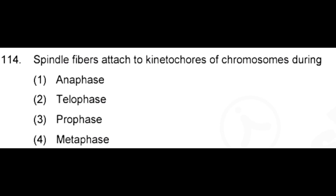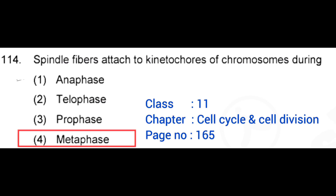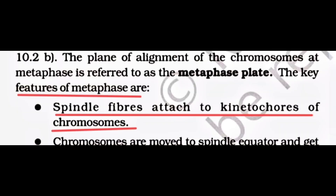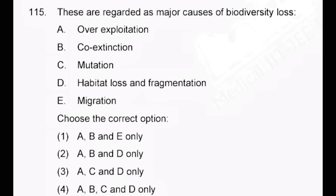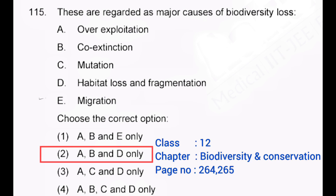Spindle fibers attach to the kinetochore of chromosomes during — correct answer: option 4, metaphase. These are regarded as major causes of biodiversity loss — correct answer: option 2, A, B and D only.